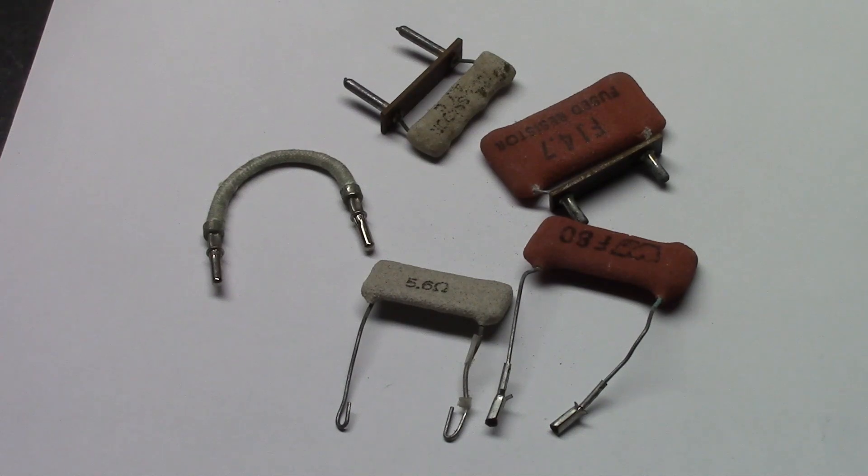Now, the other benefit to these, aside from limiting the surge current, is they're fuses. So if there was a short, say the main filter electrolytic capacitor on the B-plus supply was to short out, these would go open and protect your power transformer.